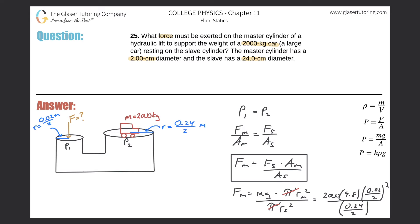All right, take out the handy dandy calculator and let's see what we get. So we get 2,000 multiplied by 9.8, multiplied by parentheses 0.02 divided by 2, square that result, and then take that whole answer divided by 0.24 divided by 2, and that's squared. So we get about 136.